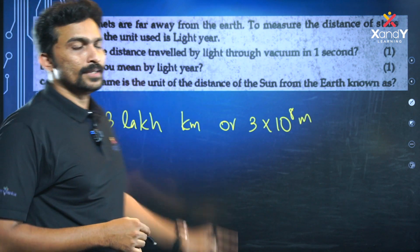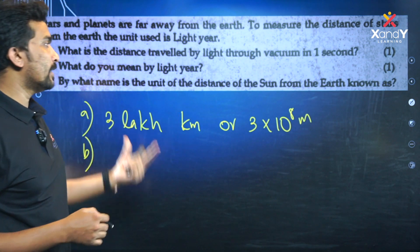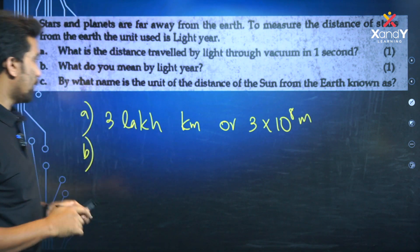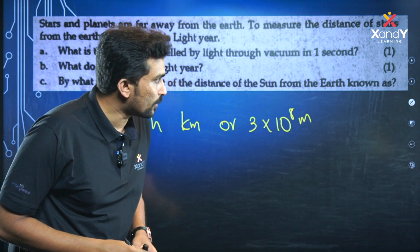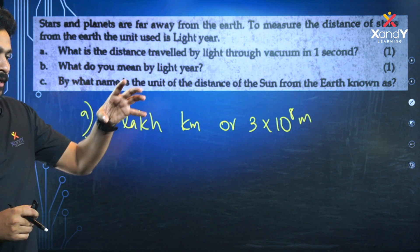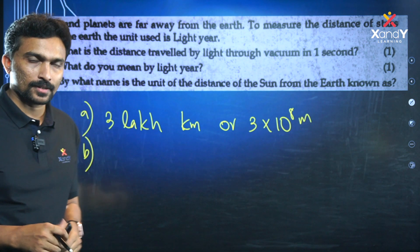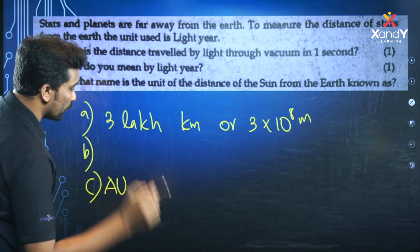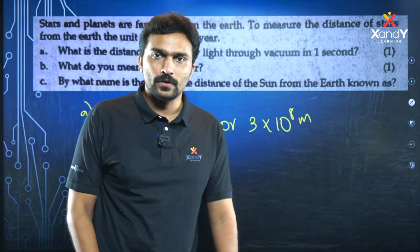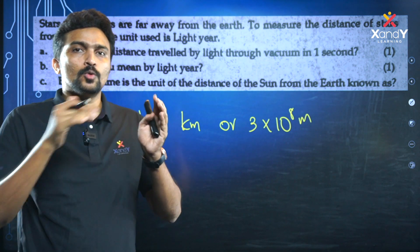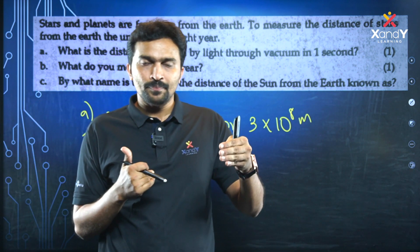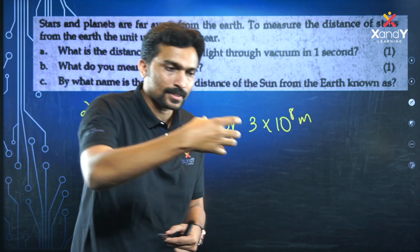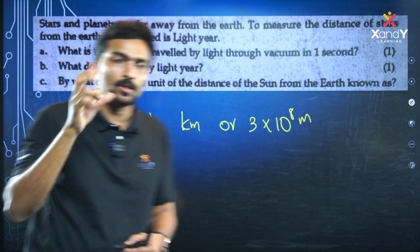What do you mean by light year? A light year is the distance traveled by light in one year. By what name is the unit of distance of the sun from the Earth known? It is called the astronomical unit, abbreviated as AU. The average value of this distance is the astronomical unit.